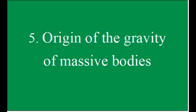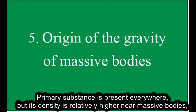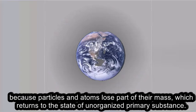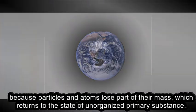5. Origin of the Gravity of Massive Bodies. Primary substance is present everywhere, but its density is relatively higher near massive bodies, because particles and atoms lose part of their mass, which returns to the state of unorganized primary substance.